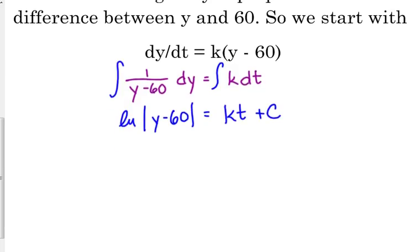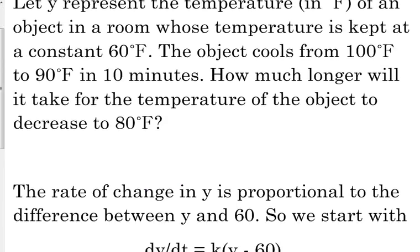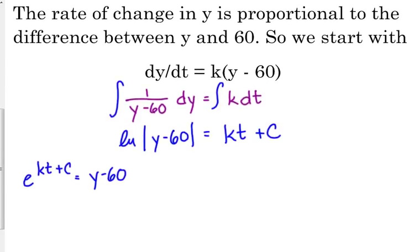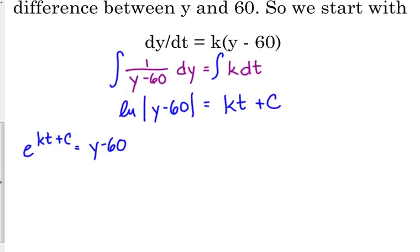We're still going to write it in exponential form. And we can drop the absolute value bars again, because our temperature is always going to be above that 60 degrees. That object is not going to be able to drop below the temperature in the room.